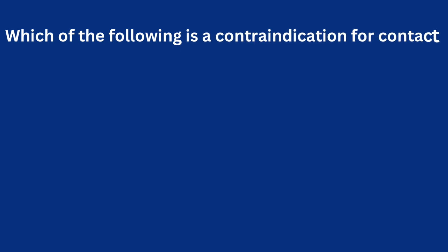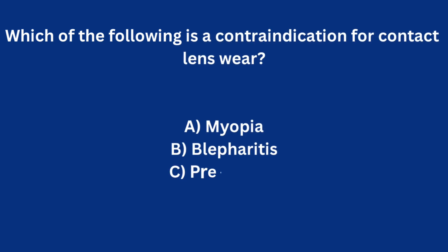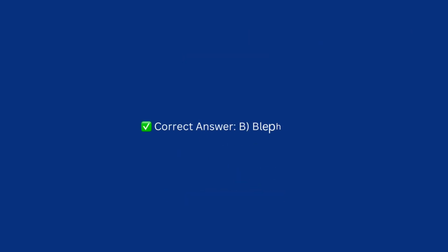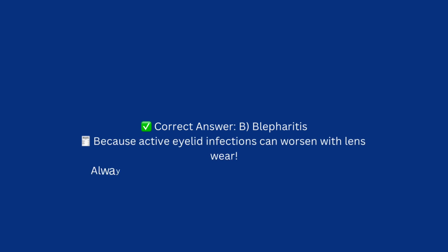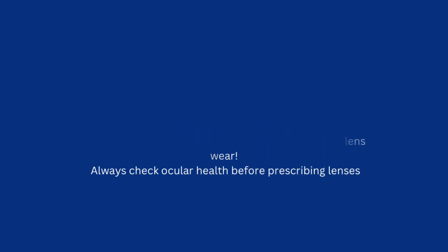Which of the following is a contraindication for contact lens wear? A) Myopia, B) Blepharitis, C) Presbyopia, D) Astigmatism. Correct answer: B) Blepharitis, because active eyelid infections can worsen with lens wear. Always check ocular health before prescribing lenses.